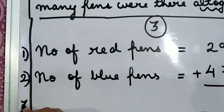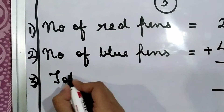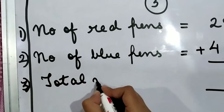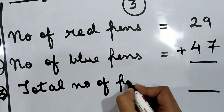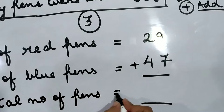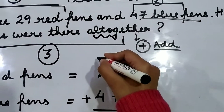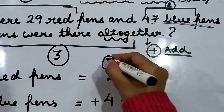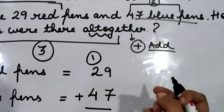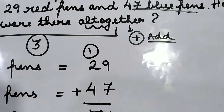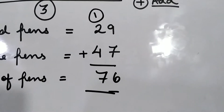Then you will put a plus sign here. And then we are going to write down the third statement, which will be the third part of the question: total number of pens equals 9 plus 7 is 16, so 1 carry — 6 here — 3, 4, 5, 6, 7. So the answer would be 76. Your answer is 76.